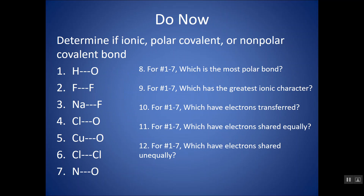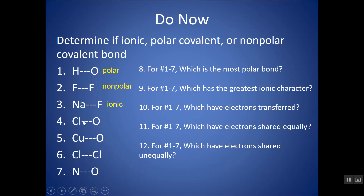Let's try some examples. H and O are two different non-metals, so it's a covalent bond and it would be polar. Two of the same non-metals bonded together would be non-polar. Na and F: ionic — metal and non-metal. Two non-metals that are different: polar. A metal and a non-metal: ionic. Two of the same non-metals joined together: non-polar.